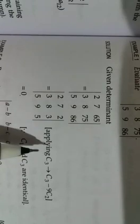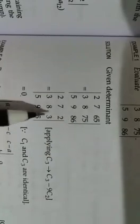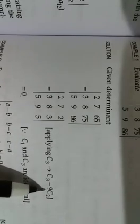C3 will be 65 minus 9 times C2. So this will be how much? 65 minus 9 in C2, we will get 2. Similarly, 75 then C3 minus 9 C2, we will get 3, and this will be 5.